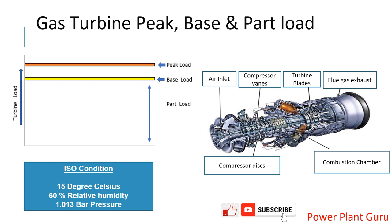Peak load conditions are not healthy for the machine. Only in extreme requirements or emergencies do power plant operators go for peak load. As soon as the emergency or higher load requirement reduces, they try to resume base load operations for best life and best efficiency. If there is a further reduction in load required, the operator reduces load from base load, and any load lower than base load where the IGV starts closing from its full open position is called part load. From full speed no load up to base load, for whatever reason, this is part load condition.